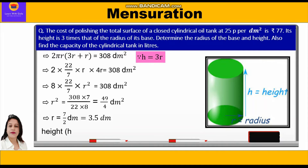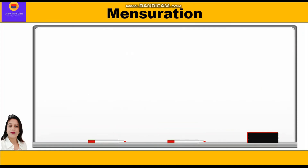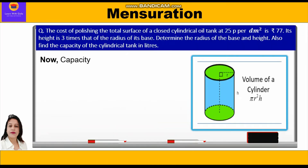Now we know height = 3 × radius, so height = 3 × (7/2) = 21/2 = 10.5 dm. So the radius is 3.5 decimeters and the height is 10.5 decimeters.